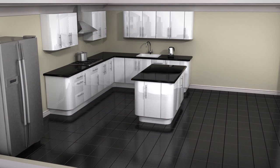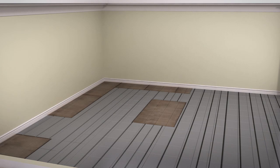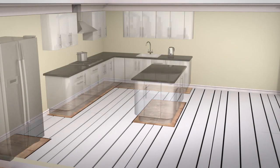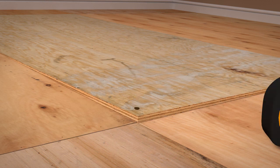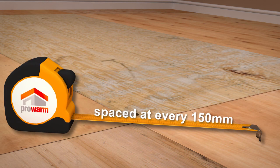For areas that do not require the underfloor heating, such as beneath kitchen units, an 18mm WBP plywood can be installed as a direct replacement. This will need to be secured to the subfloor using screws spaced at every 150mm centres.